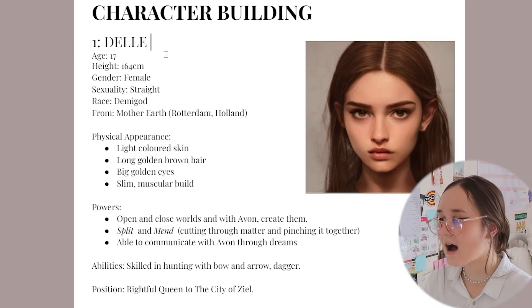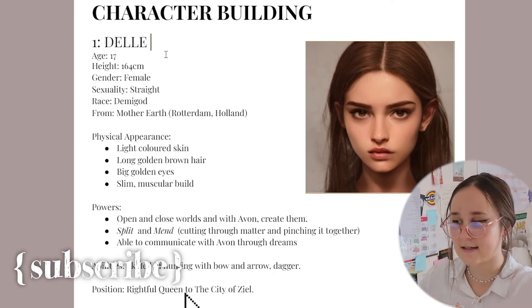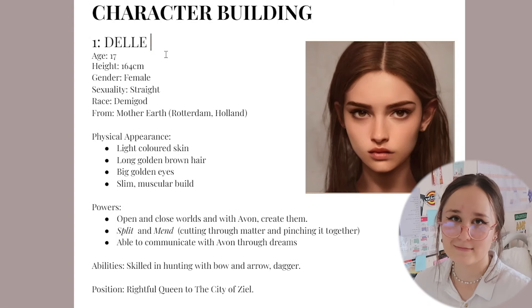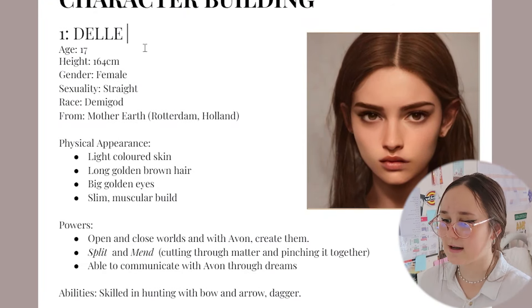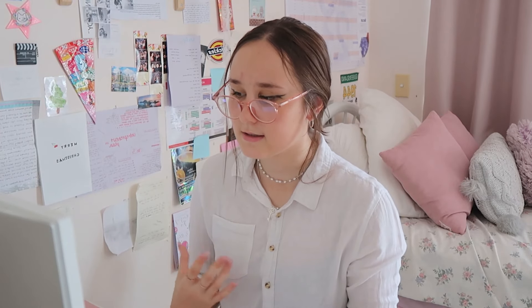Del is 17. Then I have height. Height is kind of important because it gauges the differences between characters, and it can maybe become like a trait. Del might be kind of short. Then we have gender and sexuality — those two are pretty simple. Then we have race and from. Del actually isn't a human — she's a demigod. And she's from Mother Earth, Rotterdam, Holland, so I put that in brackets just to kind of give more detail.